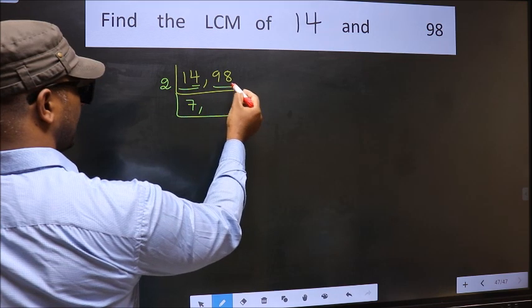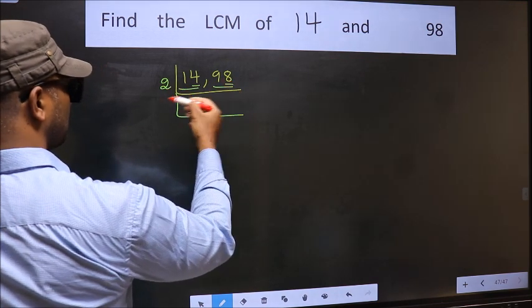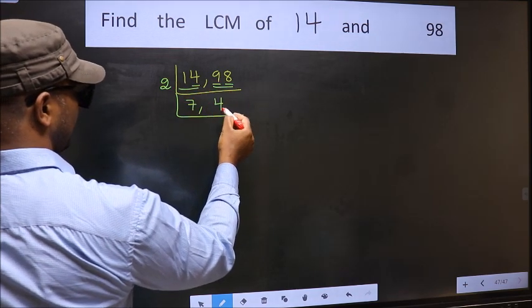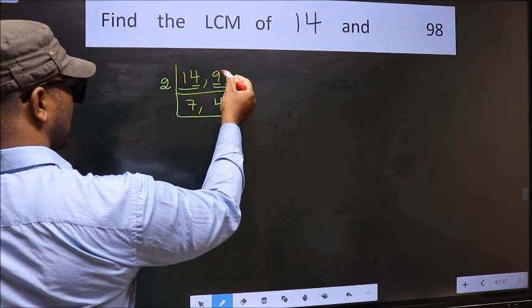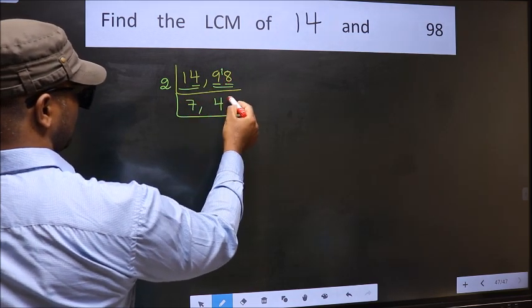The other number 98, last digit 8 even, so this is divisible by 2. First number 9. A number close to 9 in 2 table is 2 times 4 is 8. 9 minus 8, 1 carried forward, 18. When do we get 18 in 2 table? 2 times 9 is 18.